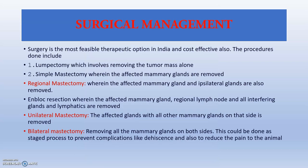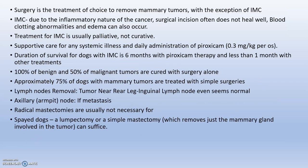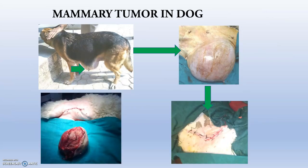Surgery is the most feasible and cost-effective therapeutic option. Surgical options include: lumpectomy (removing the tumor mass), simple mastectomy (removing affected mammary glands), regional mastectomy (removing affected and ipsilateral glands), unilateral mastectomy (affected glands and all glands on one side), and bilateral mastectomy (removing all glands on both sides). Supporting care for systemic illness should also be provided, and axillary lymph nodes should be checked for metastasis.